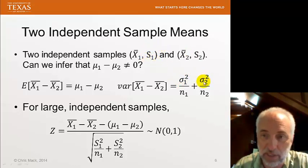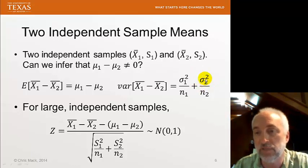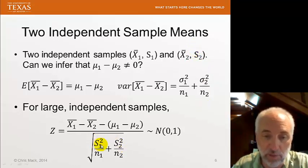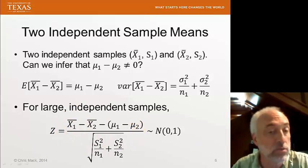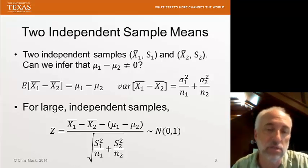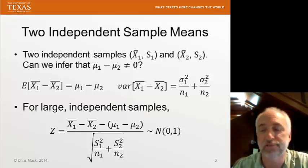If I have large independent samples, then it's a pretty good approximation to estimate sigma 1 by the sample standard deviation. And we can estimate the population standard deviation of the second population with the second sample standard deviation. And we can plug them in. This Z-score then becomes about normal, standard normal, and we can do our standard confidence interval and hypothesis tests as a result.